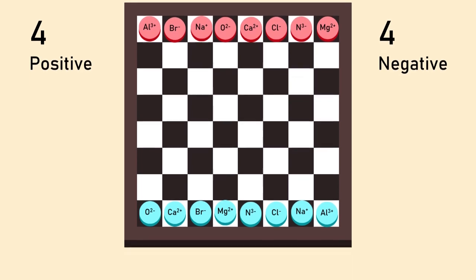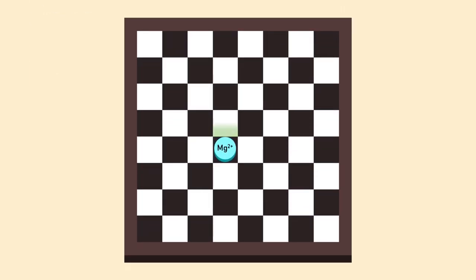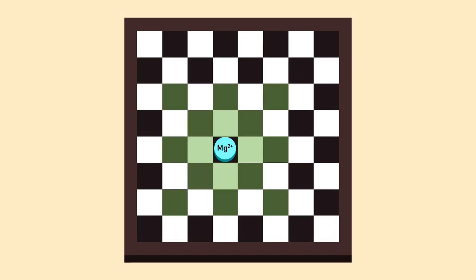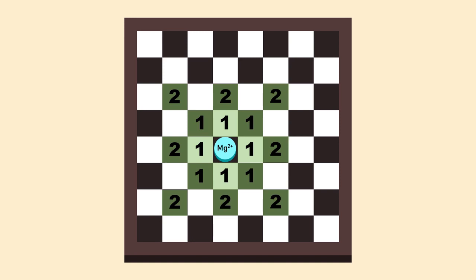An ion moves similarly like the queen in chess—that is forward, backward, right, left, and diagonal. However, an ion has a limited range of movement depending on its charge. Here, the charge of magnesium ion is two, so it can only move for two steps in any direction.